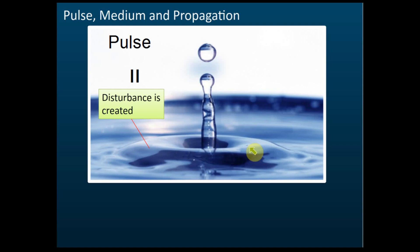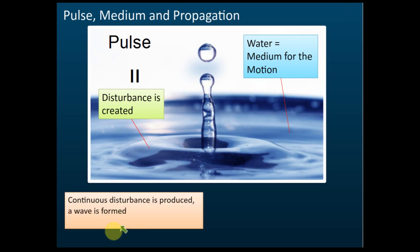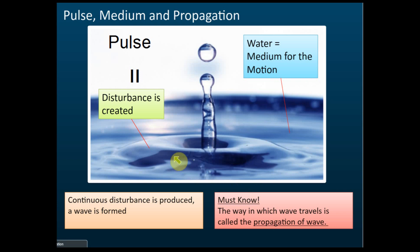If you have a continuous disturbance — not just one — it's called a wave. The water is called the medium for the motion of the wave. So a wave is a continuous disturbance, and the way the wave travels is called the propagation of the wave.